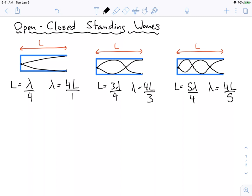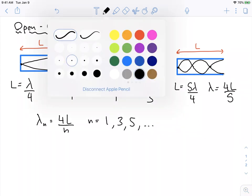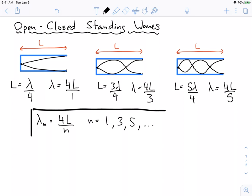I think we see the pattern starting to emerge here. Lambda N is equal to four times the length divided by N, which is some integer. You notice a little difference. It's one, three, and five. So it's just the odd integers that are allowed in this equation, none of the even ones. That's a really important distinction. This is important enough to put a box around.